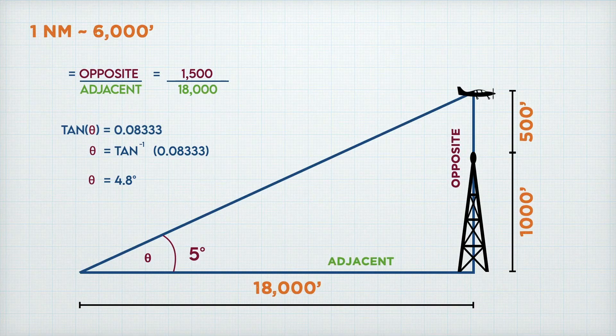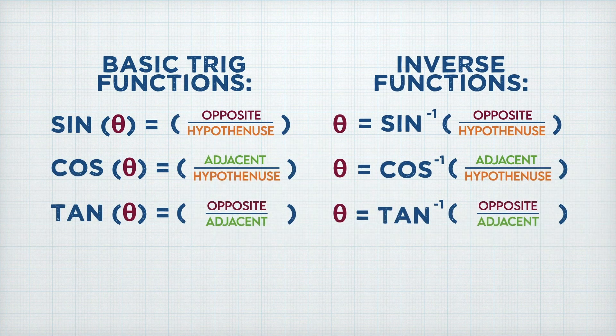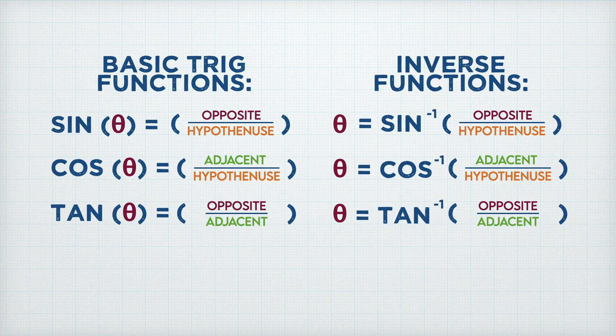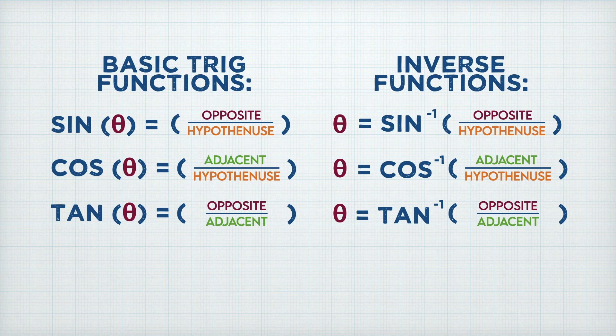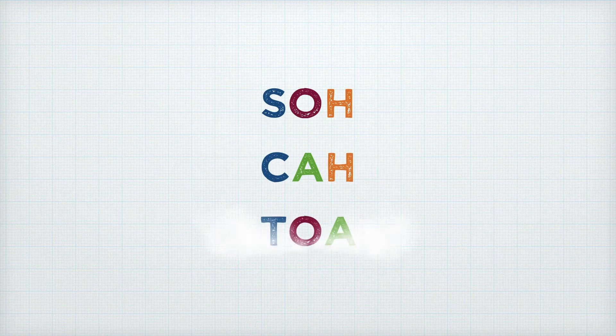That is trigonometry. So to summarize, there are three main trig functions and they are sine, cosine and tangent. And they each have an inverse. So if you know the angle, you can use the function. And if you don't know the angle, you can use the inverse. And these can easily be remembered by using the mnemonic SOHCAHTOA.